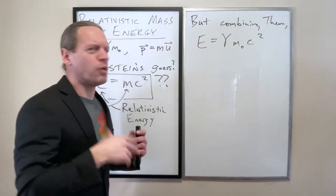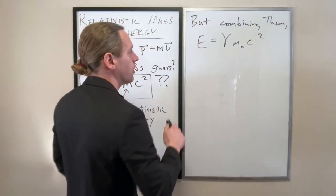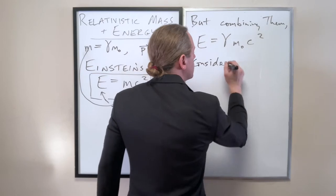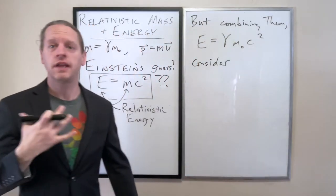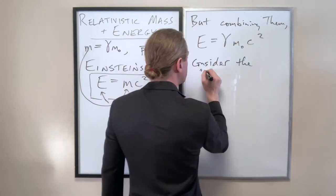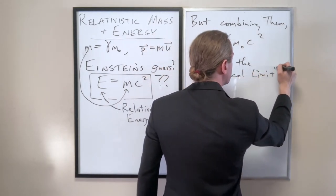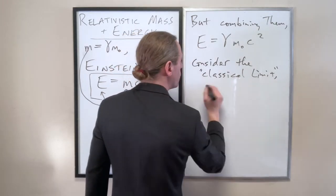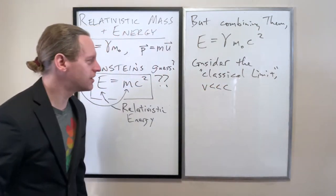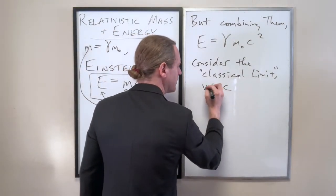And now let's consider, what if we have like very low velocities? So consider the classical limit is the word we use for that. And by that specifically we mean where V is much less than C.